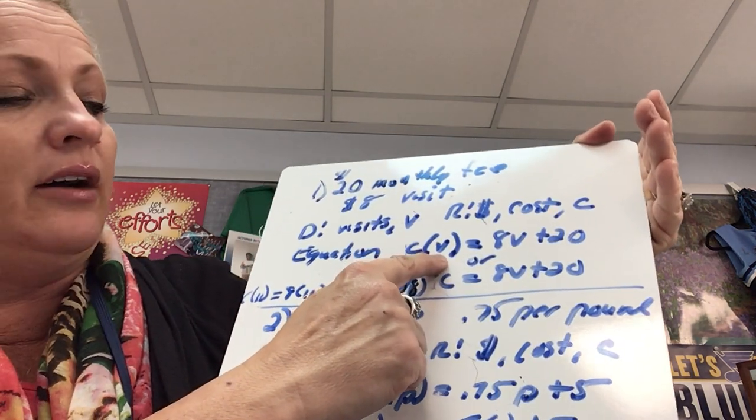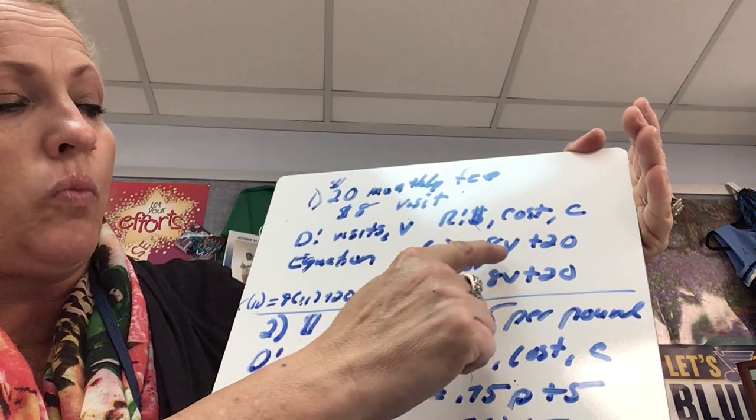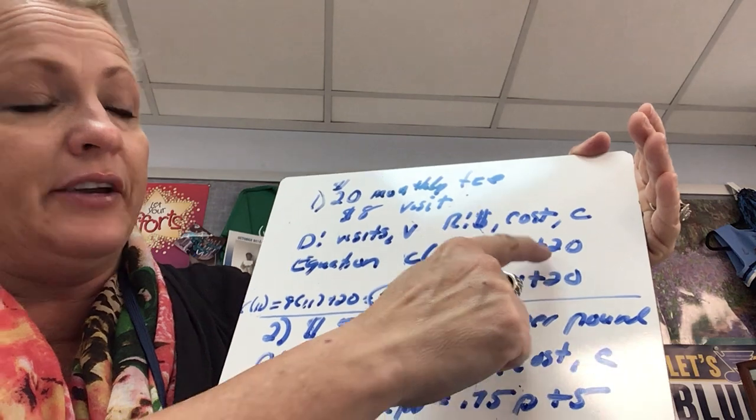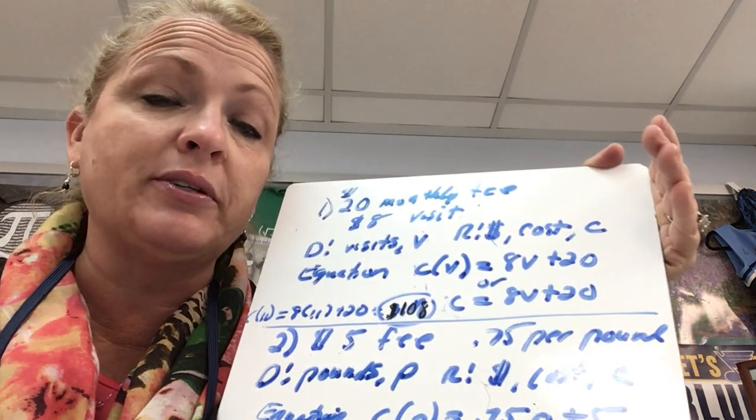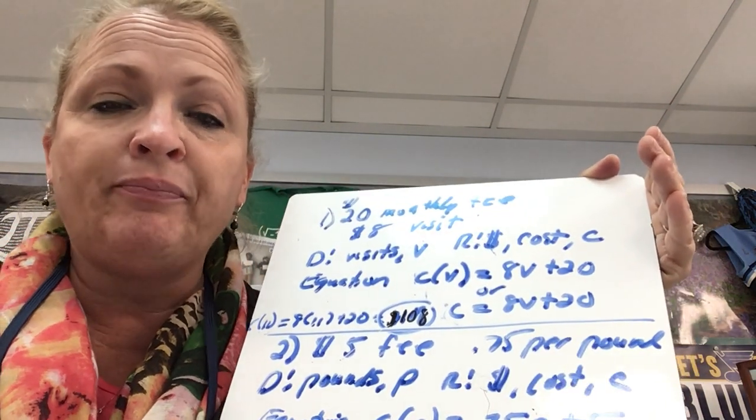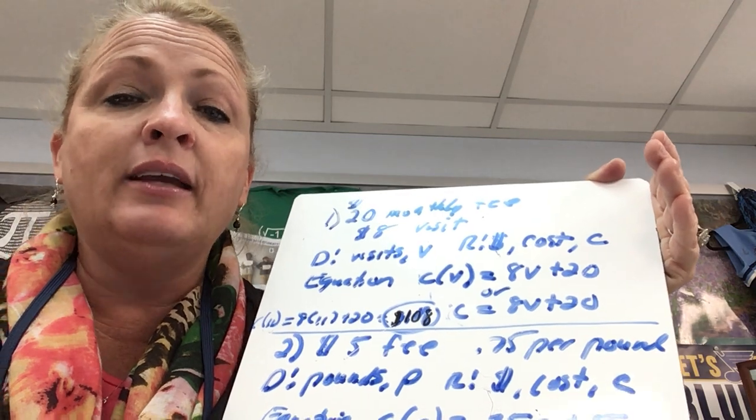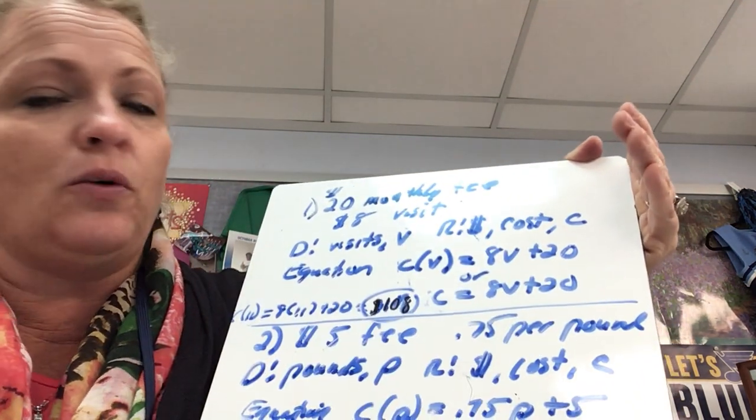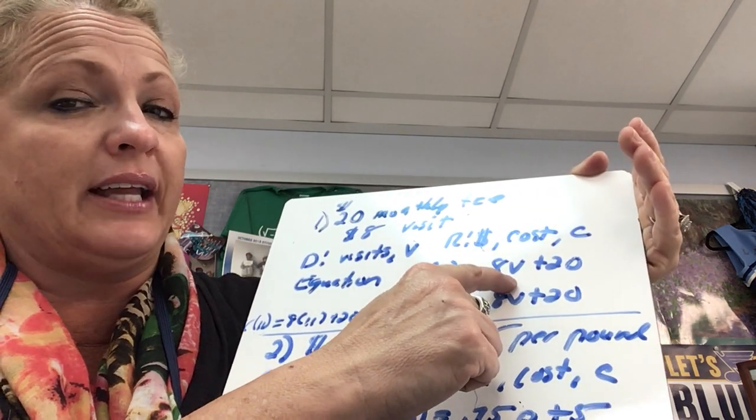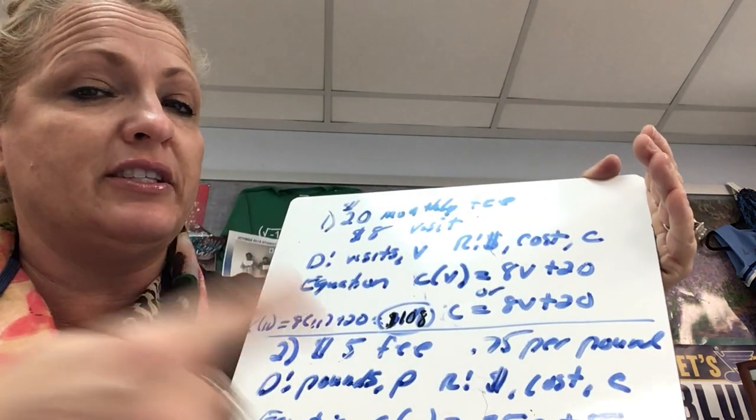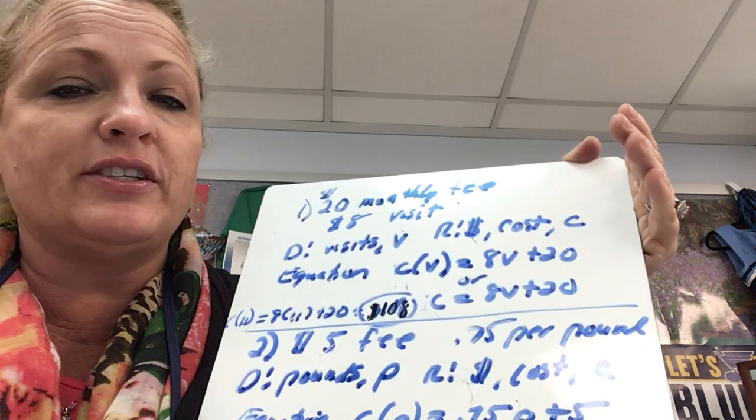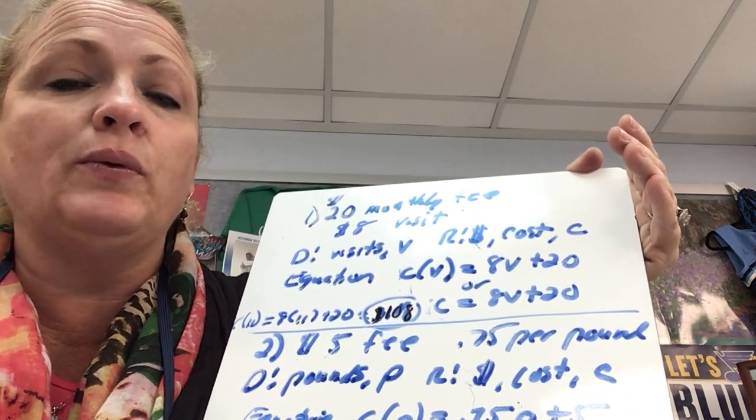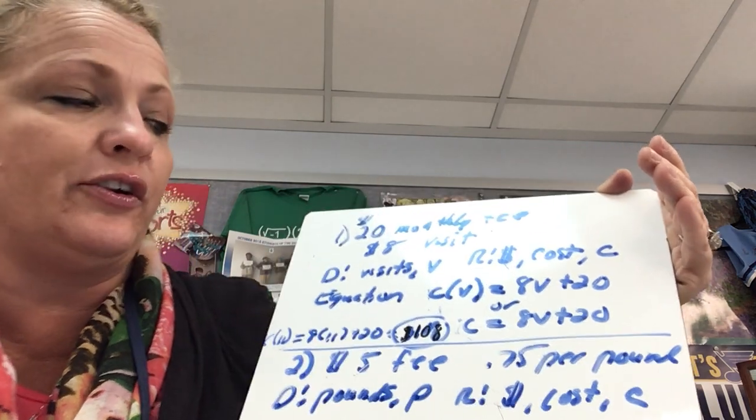So what is my equation? Cost is a function of the number of visits, so how many visits, how much does it cost per visit? $8. And no matter what, whether I go 0 times or 20 times, my monthly fee just for belonging is $20. If you look at this equation, 8 is the slope, that's the rate of change. For every visit you make, $20 is the y-intercept, that's where you start.